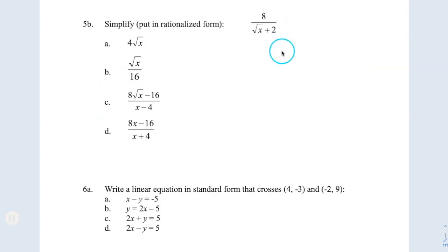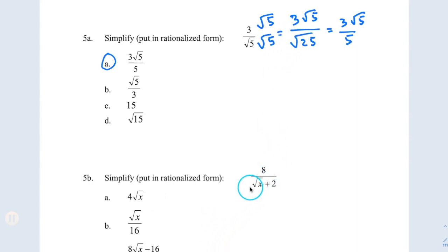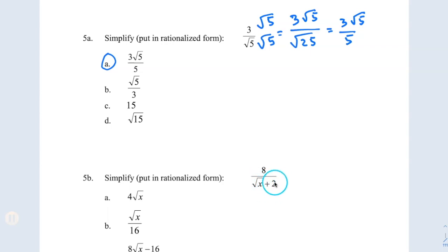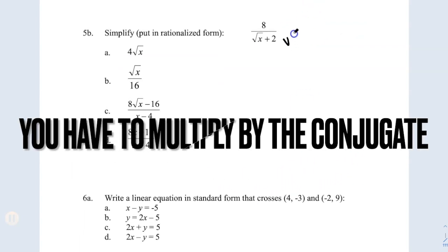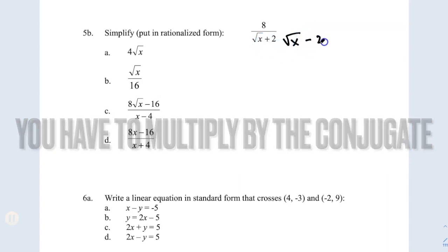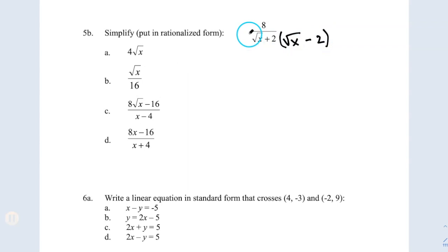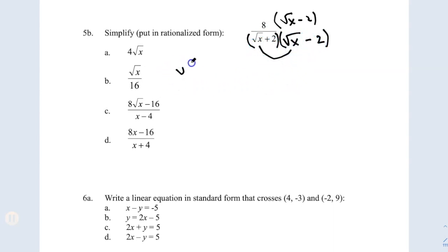Next, question 5b — same idea: I have a square root in the denominator which I'm not allowed. The difference is that here there is a 2 next to the radical. So the trick is to multiply by the conjugate: the same square root of x, but instead of plus 2 I'm going to put minus 2. Whatever I do in the denominator I have to do in the numerator. My concern right now is the denominator, so let's FOIL those two binomials.